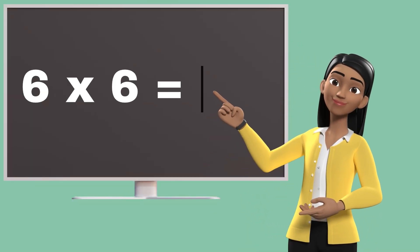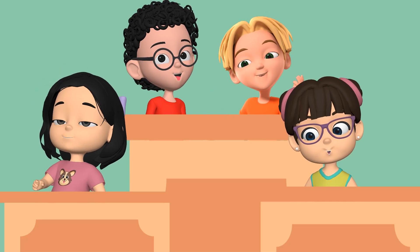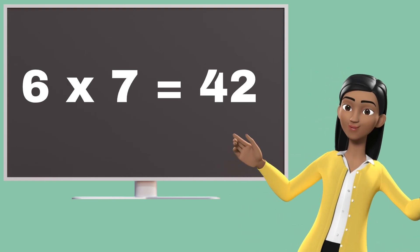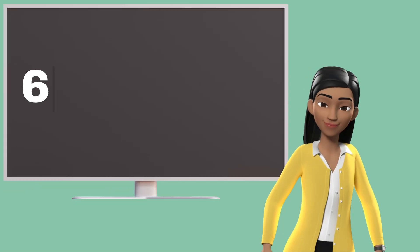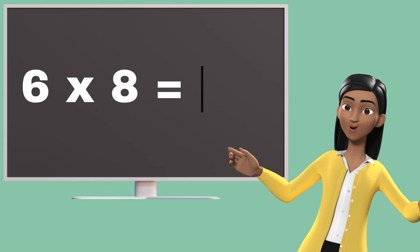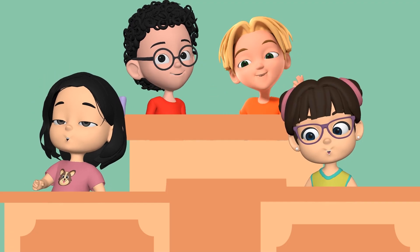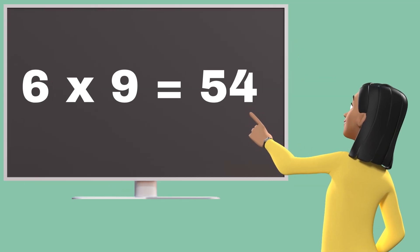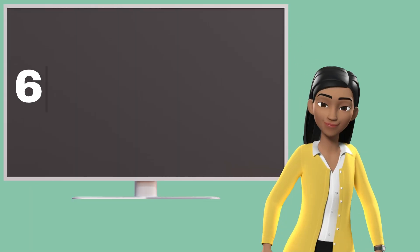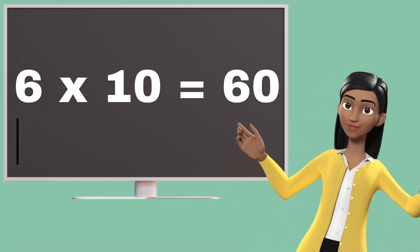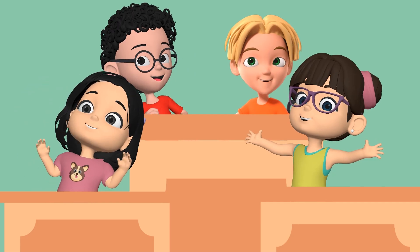Six sixes are thirty-six. Six sixes are thirty-six. Six sevens are forty-two. Six sevens are forty-two. Six eights are forty-eight. Six eights are forty-eight. Six nines are fifty-four. Six nines are fifty-four. Six tens are sixty. Six tens are sixty.